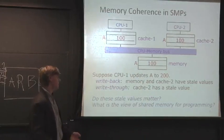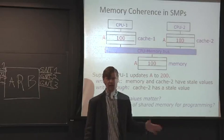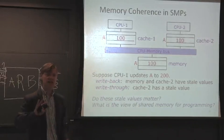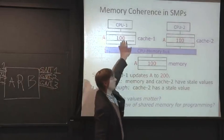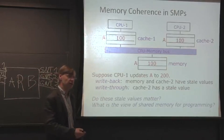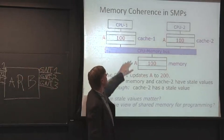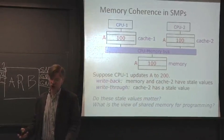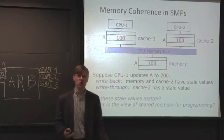The question comes up: maybe this is just a problem with write-back caches. Maybe we should be using write-through caches instead because then at least everything goes out to main memory. Let's take a look at the same example. We have 100, 100, and 100. Now CPU1 goes and does a write to address A with value 200, but now it's write-through. So that writes 200 here and 200 here. The question comes up: does cache 2 see this update? No. We have no mechanism to do this.